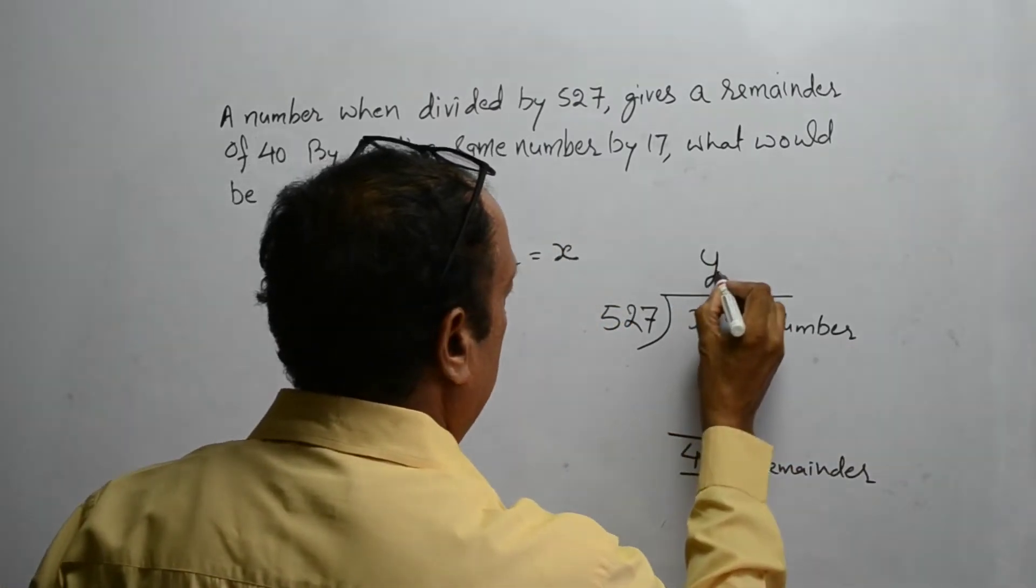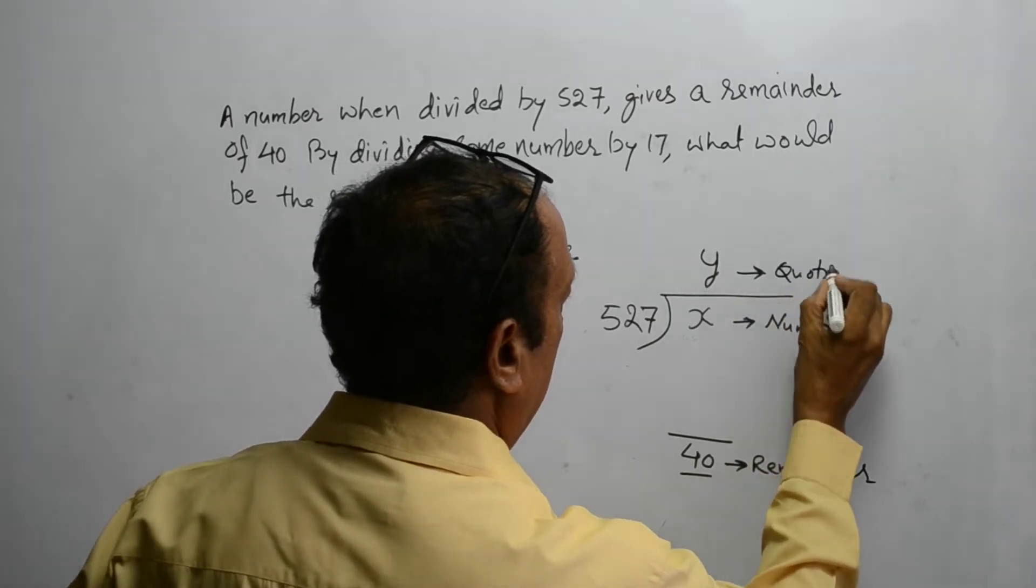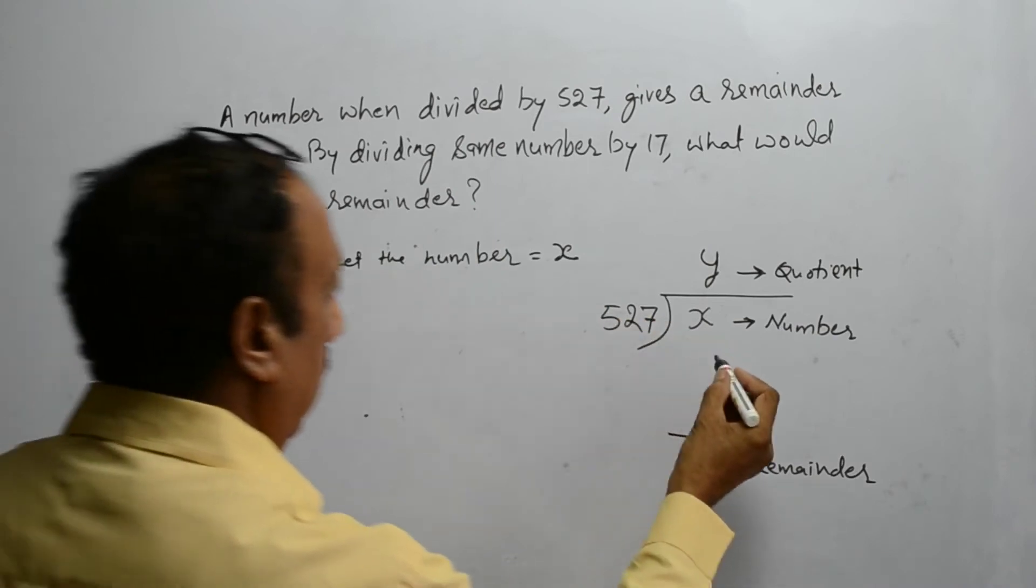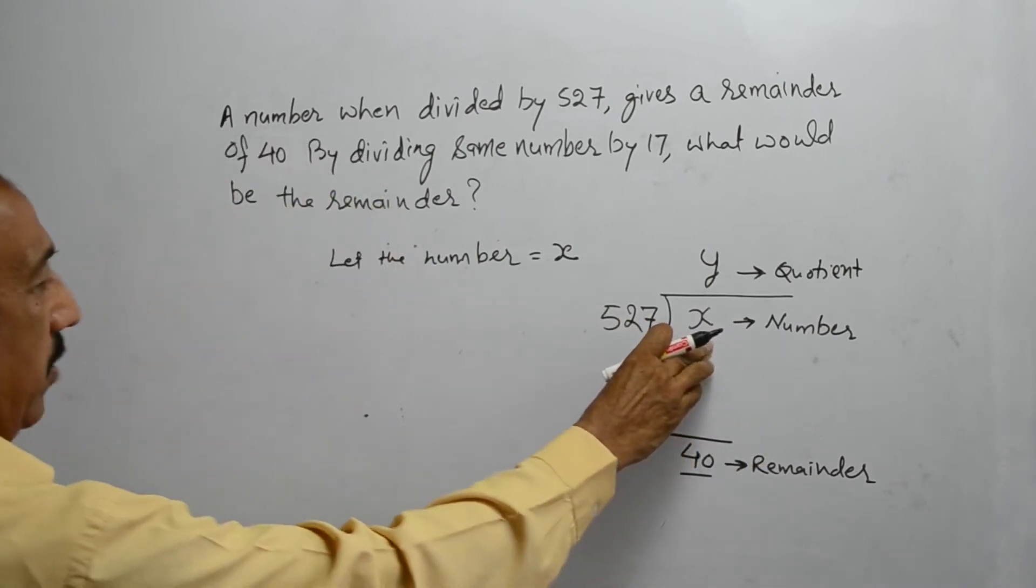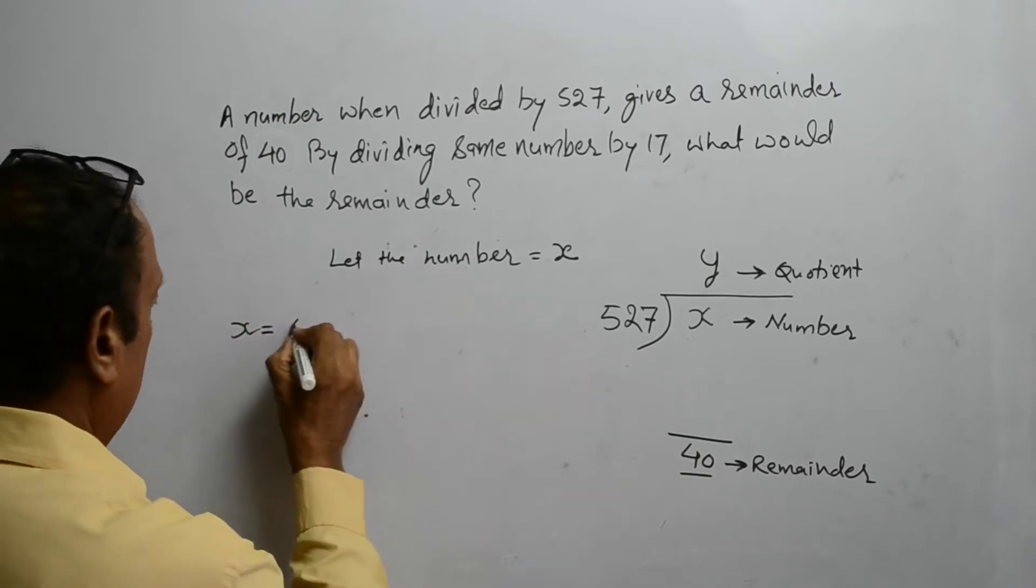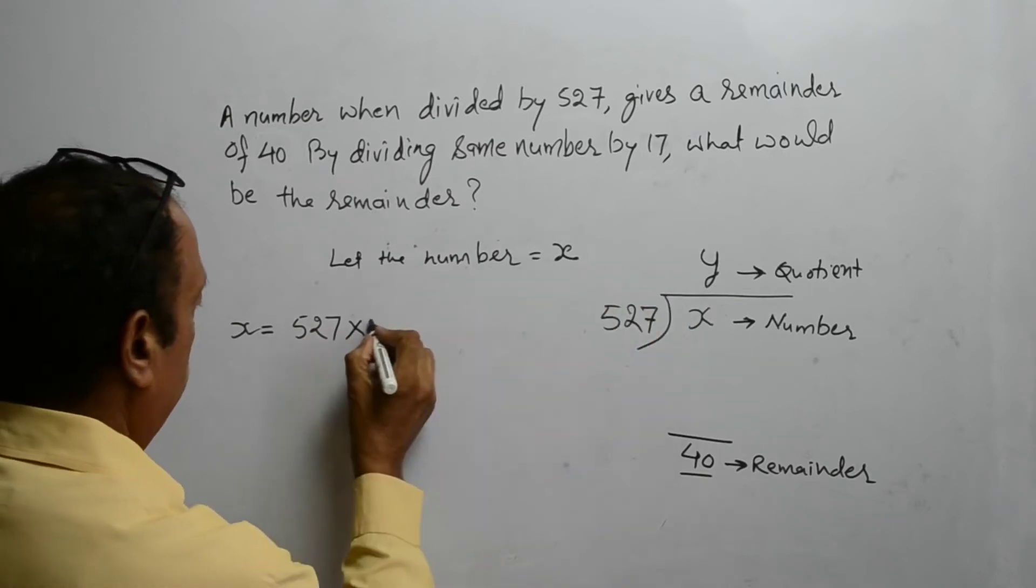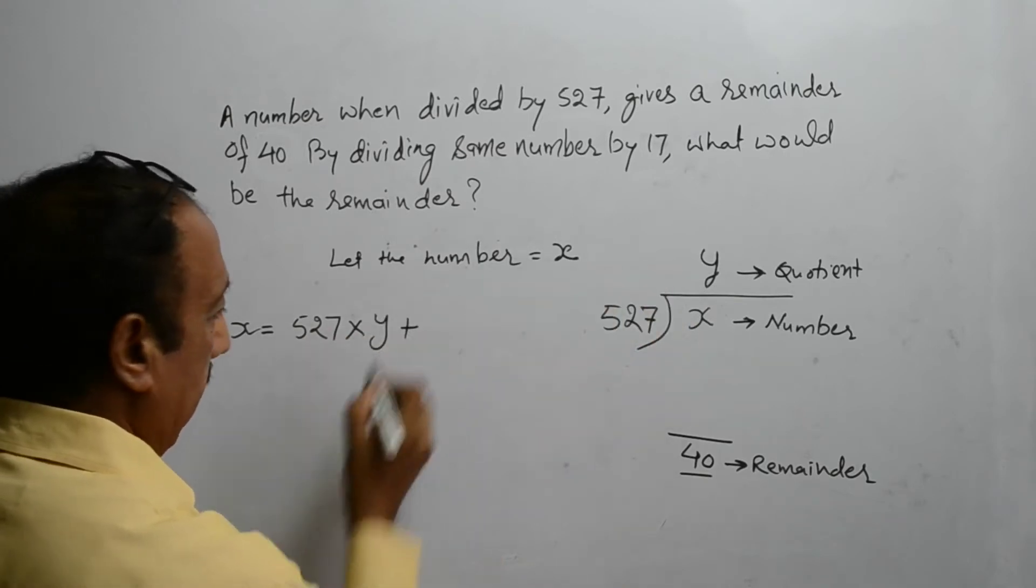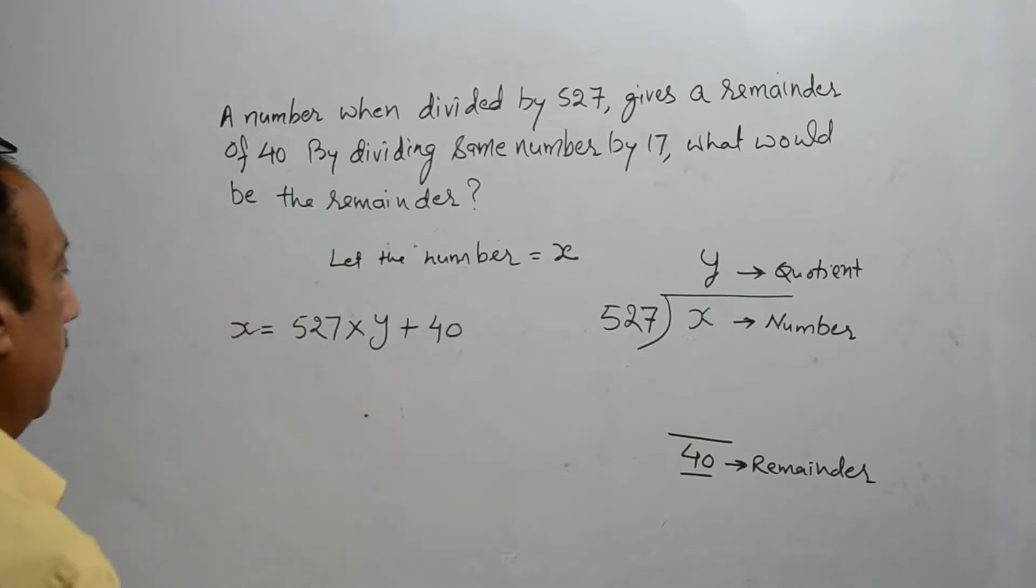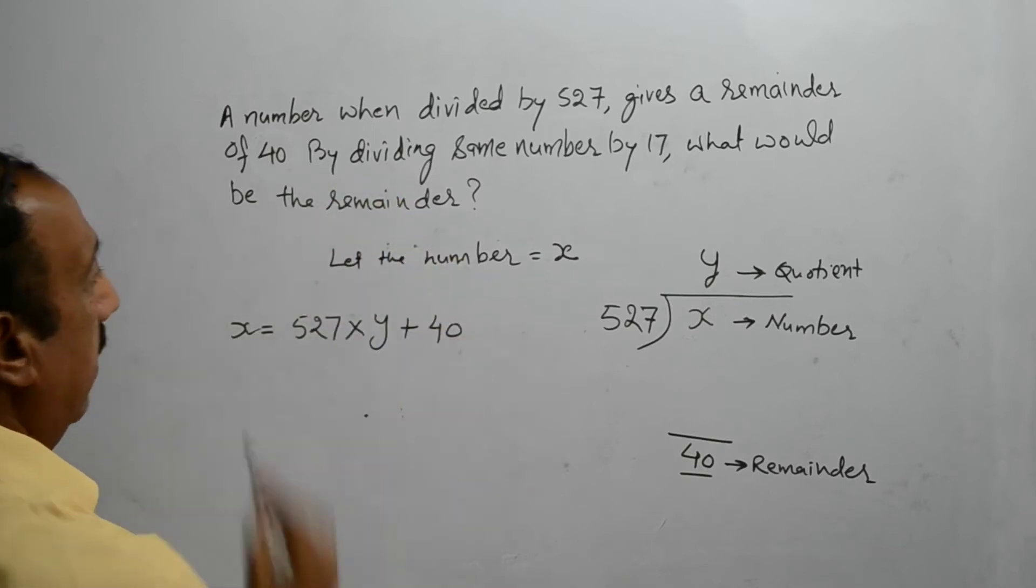Here we are going to get a number which is a quotient. So, the number or the dividend is always equal to divisor multiplied by quotient plus remainder. So this becomes the number.